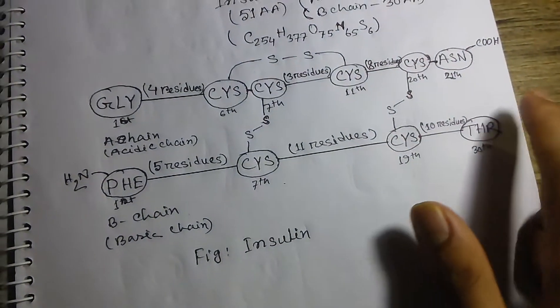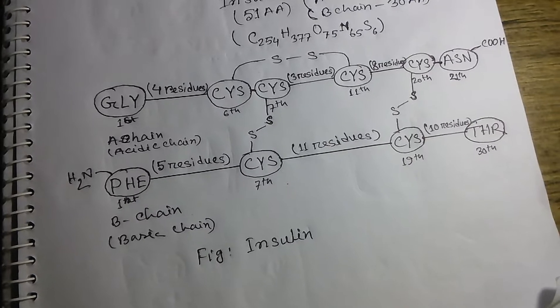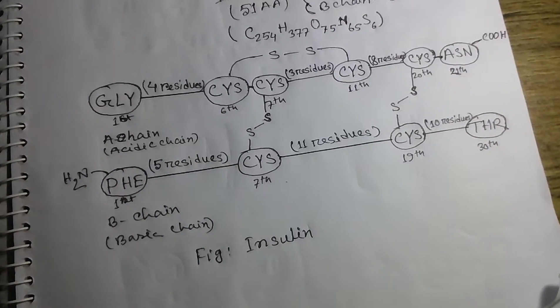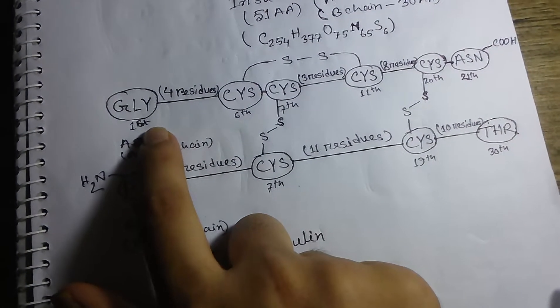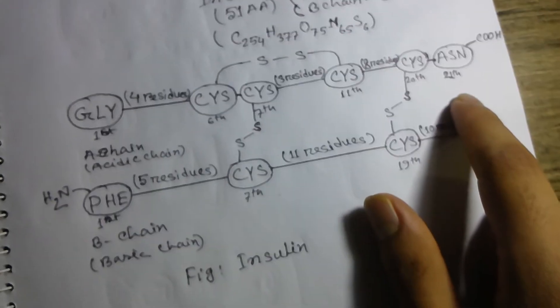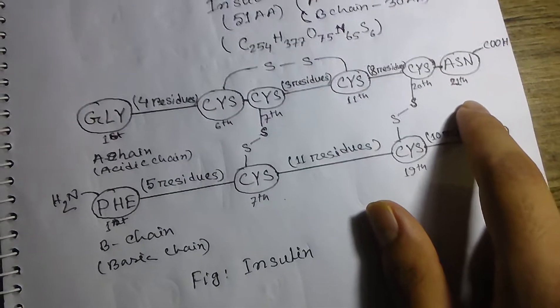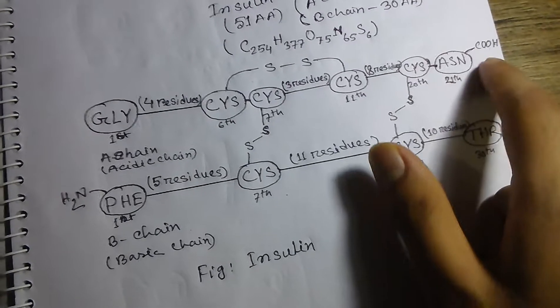A chain contains 21 amino acids and B chain contains 30 amino acids. The A chain's first position amino acid is glycine and the last position is asparagine. Asparagine contains carboxylic acid, so A chain is called the acidic chain.